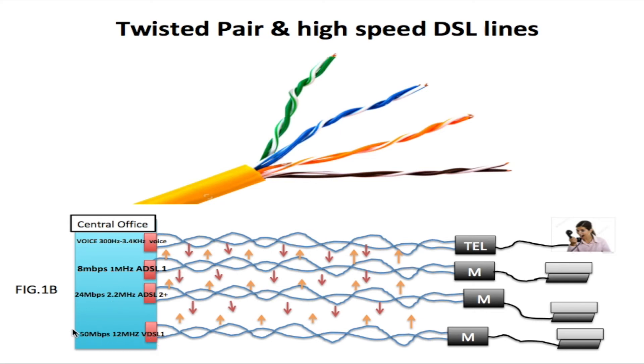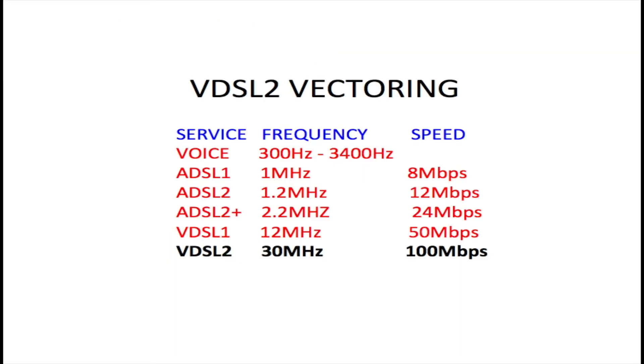As I said before, the differences between these services is generally the frequency, and as the frequency increases, so does the speed. Unfortunately, also does the crosstalk. So we can only use twisted pair in the traditional way right up to VDSL1 at 12 megahertz. For VDSL2 at 30 megahertz, in order to get 100 megabits per second, we're going to be using VDSL2 vectoring.